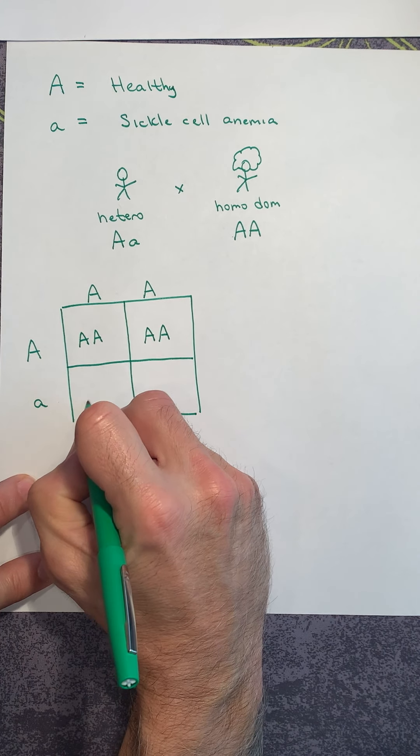So step one, dissect the problem. That's what we did here. Step two, define your alleles. Step three, define your parents or your cross. Step four, Punnett square. So now step five, let's see what the question asks for.